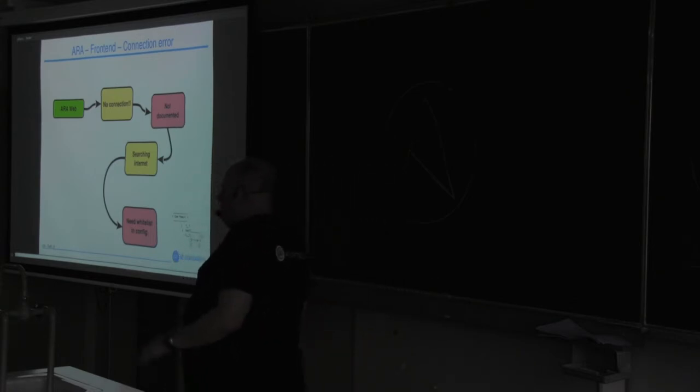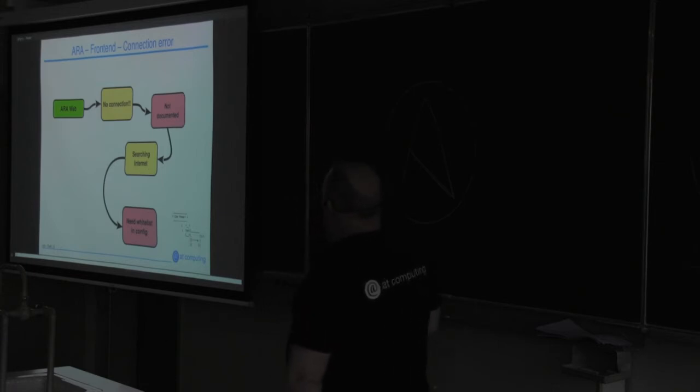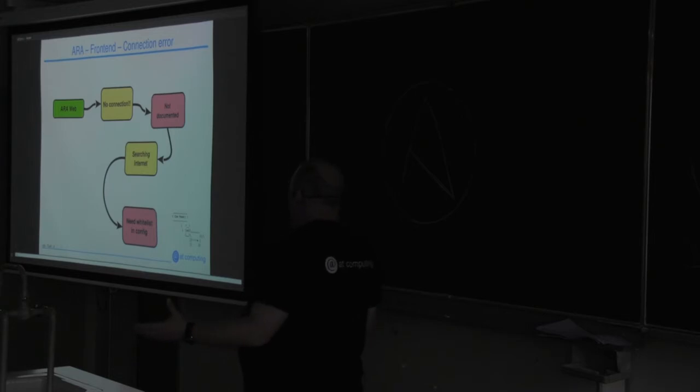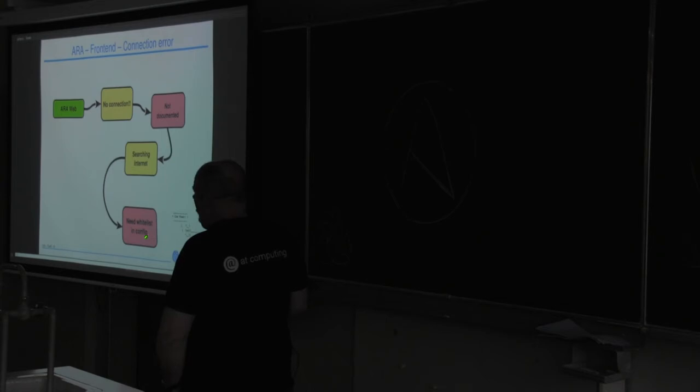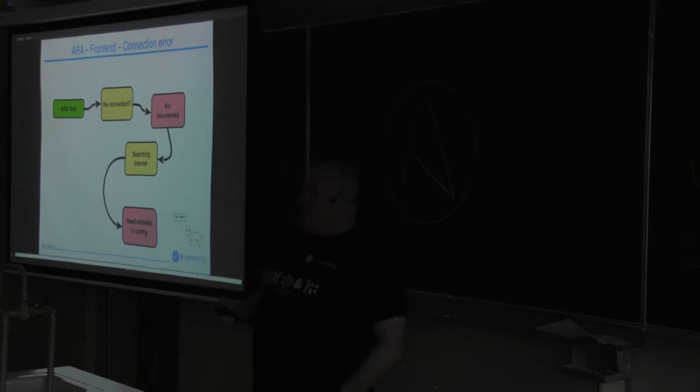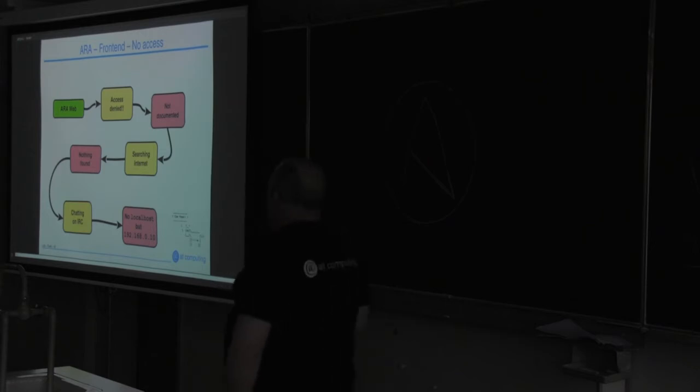Because in the documentation, which is flaky at best, there is nothing about not connecting. So you start the internet and then you find somewhere on page seven or eight of Google, you find that you need a whitelist in the config. So in the configuration of the Node.js, you need to allow the current server to attach to the frontend. Well, when that is fixed, you automatically get into an access denied error.